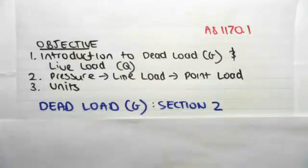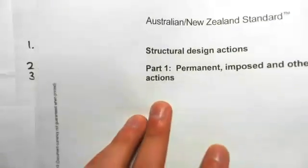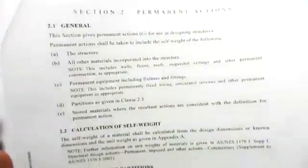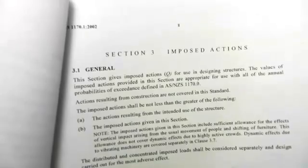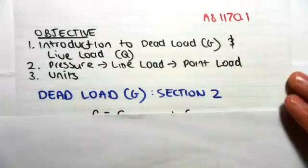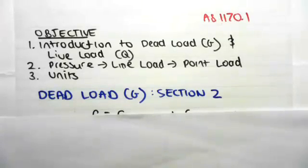The first thing we're going to be looking at is the dead load G, section two. So we're in AS1170.1, part one: permanent actions and other actions. If we go over to section two, we've got stuff about the permanent actions. Now this section is only one page — if I flip over, we're in section three straight away: imposed actions. This part of the course — working out dead and live load — is actually the least standard intensive, meaning we refer very little to the standard throughout this part of the course compared to other topics.